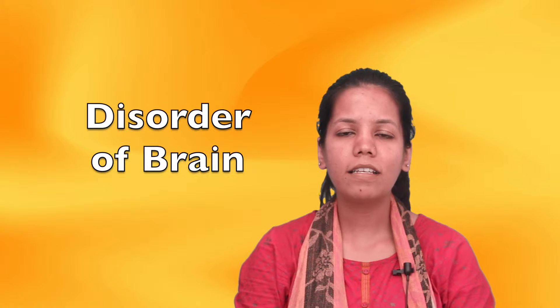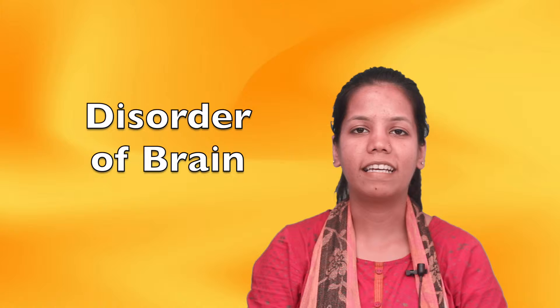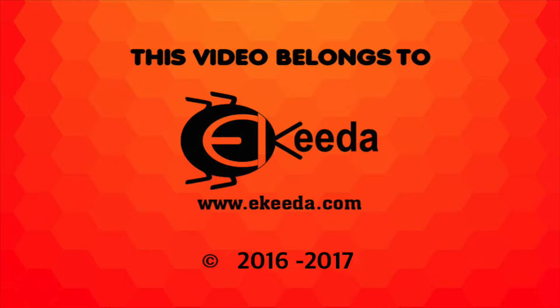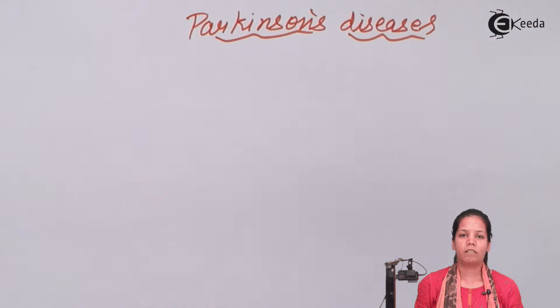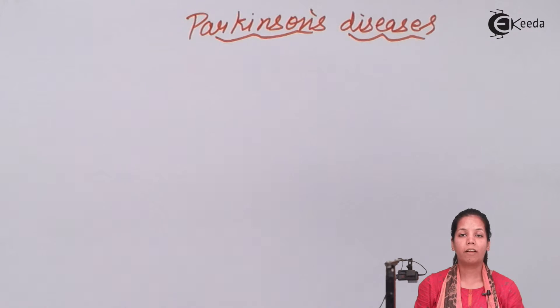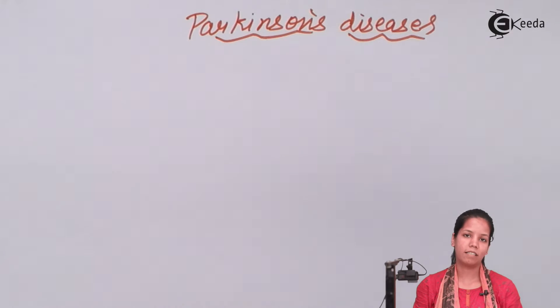Parkinson's disease is the absence of the neurotransmitter dopamine. Whenever neurotransmitters like dopamine are not prepared or are not present in enough quantity, it leads to Parkinson's disease.